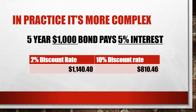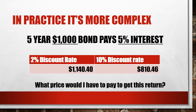With a two percent discount rate, the bond is worth one thousand, one hundred and forty dollars and forty cents. However, if we take a ten percent discount rate, it smashes the value of the bond down to eight hundred and ten dollars and forty-six cents. This discount rate is really the answer to the question: what price would I have to pay to get this return? If you wanted a ten percent return, you'd have to pay eight hundred and ten dollars forty-six for the bond.